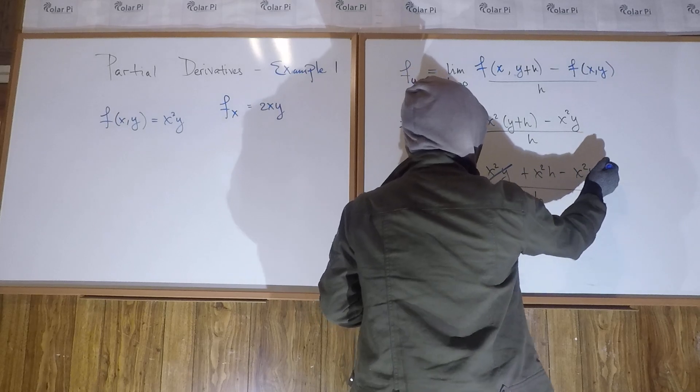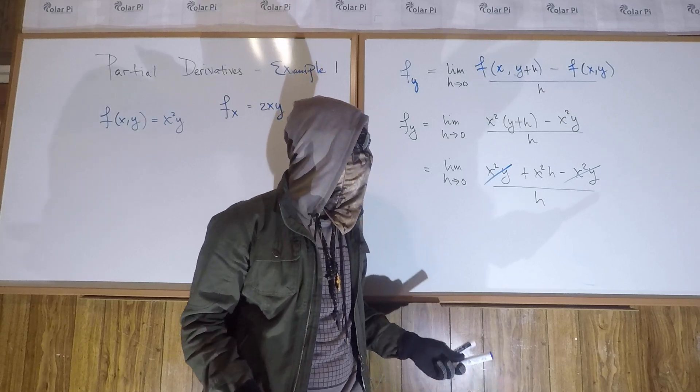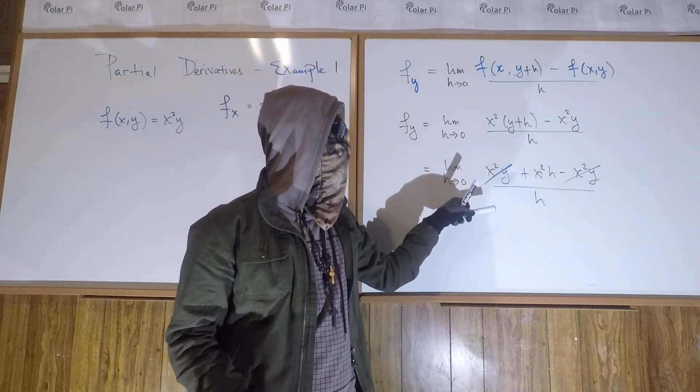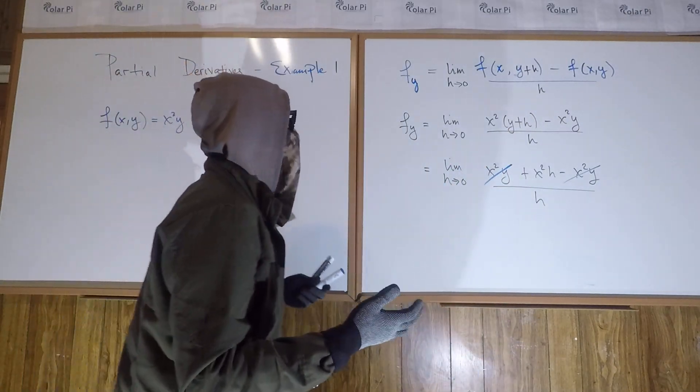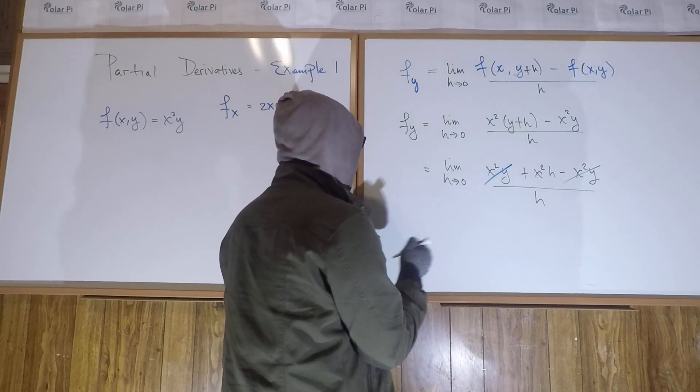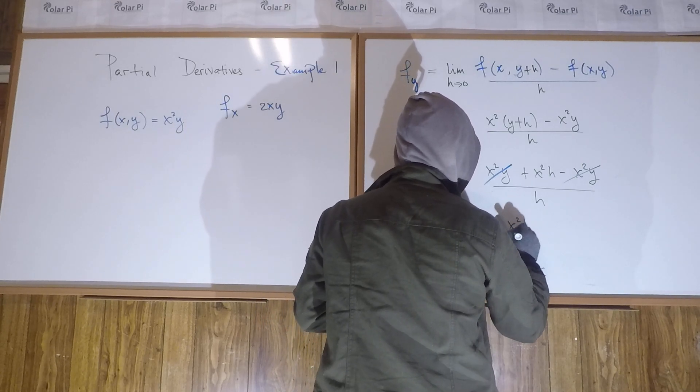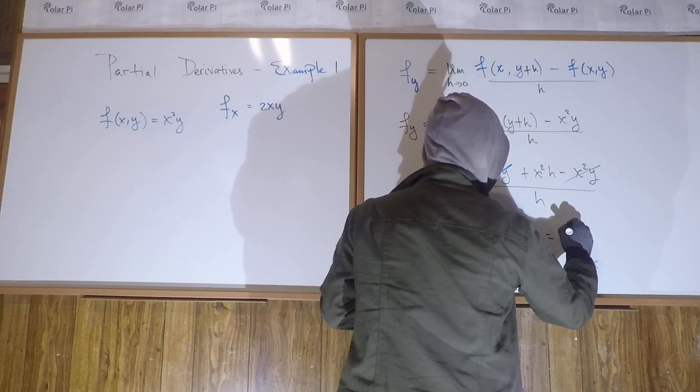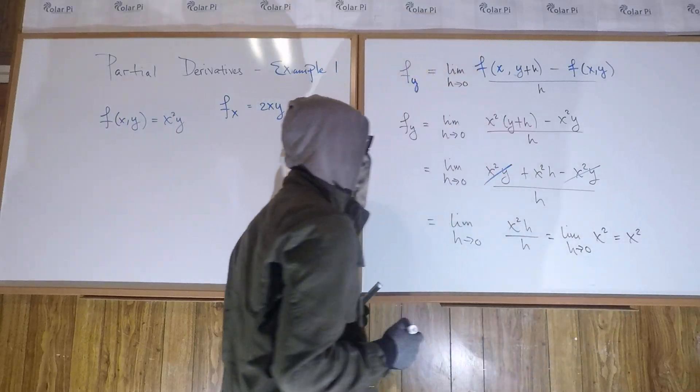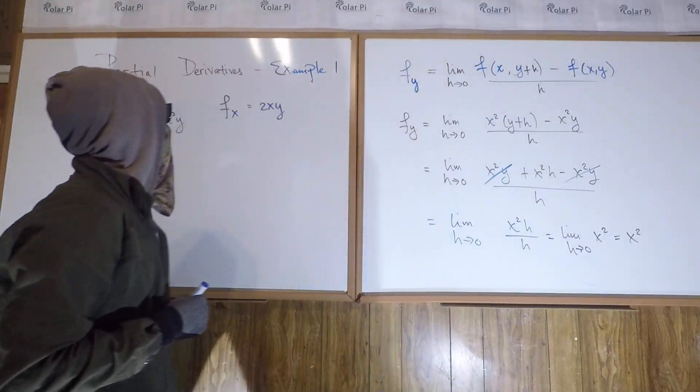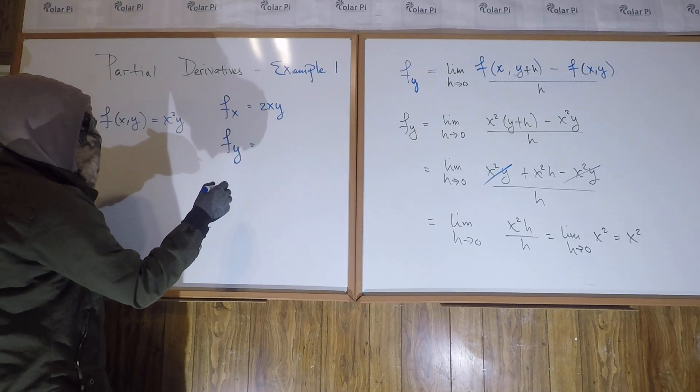So some conveniences. As in the derivative limit definition for a function of a single variable, when you're doing the algebra part, anything that doesn't have an h should cancel. You saw that happen twice. It should happen every single time if you're doing it correctly. So we go, this is the limit as h goes to zero of x squared h over h, which is the limit as h goes to zero of x squared, which is clearly x squared, because h going to zero doesn't affect that. So we see that f y is equal to simply x squared.